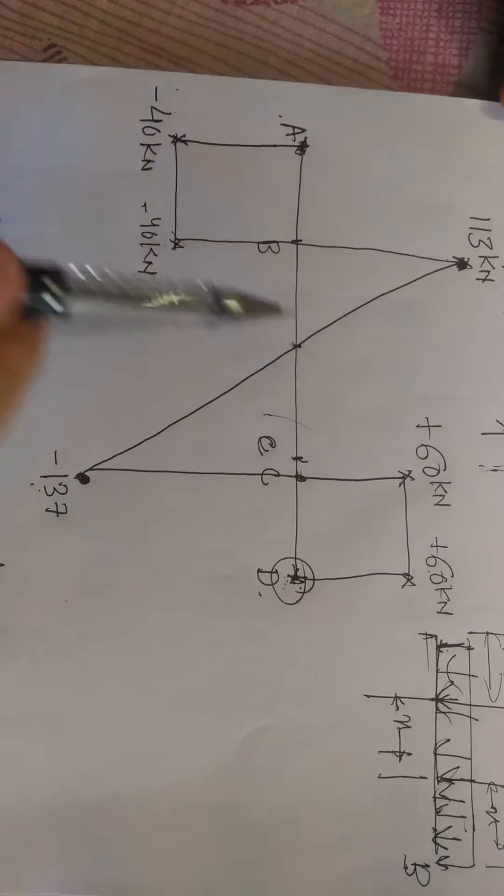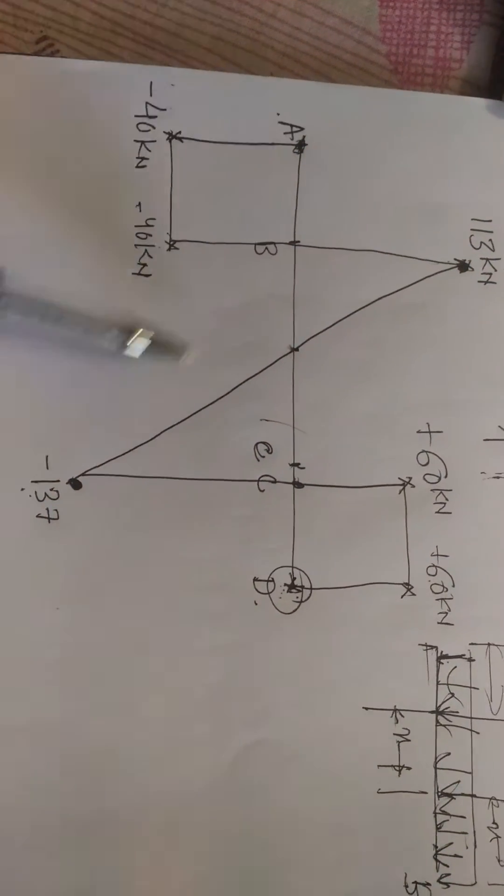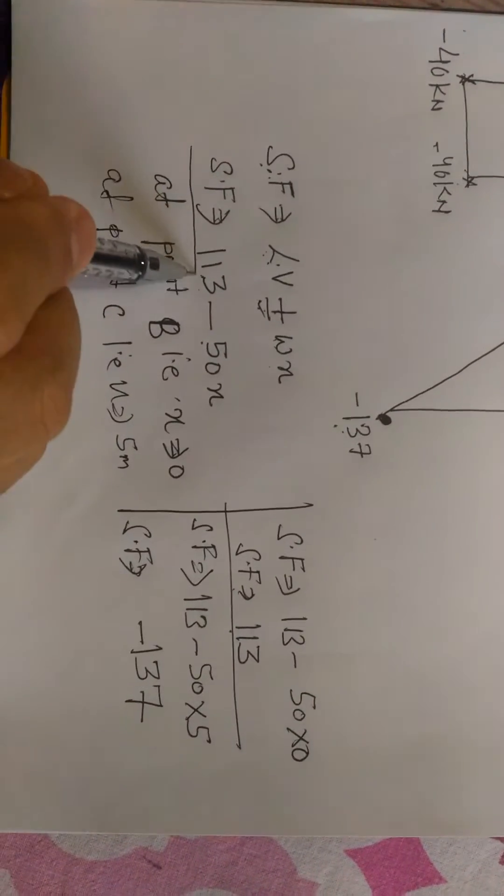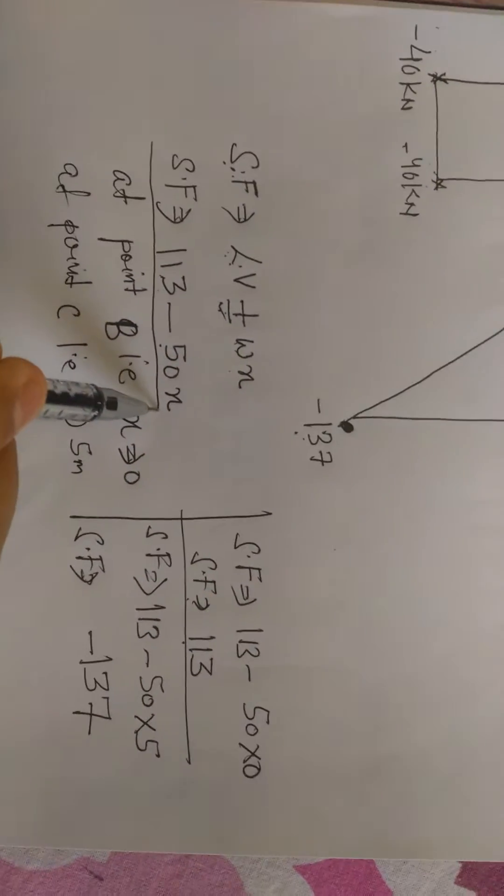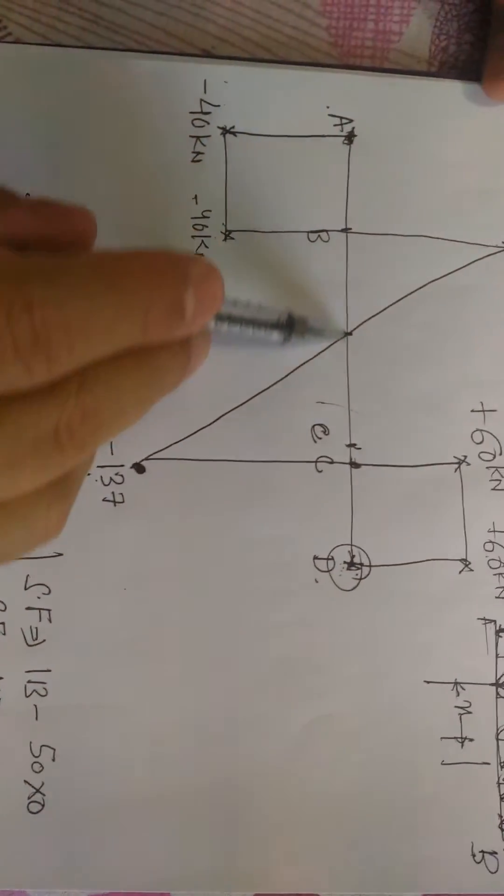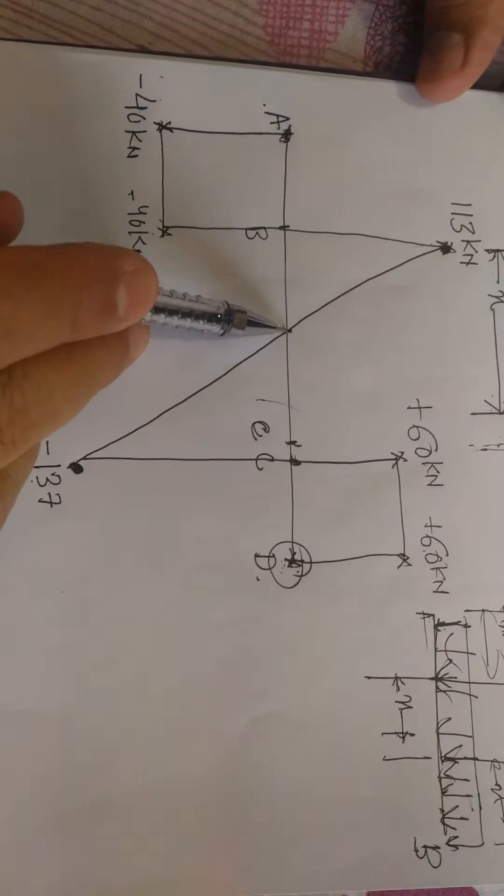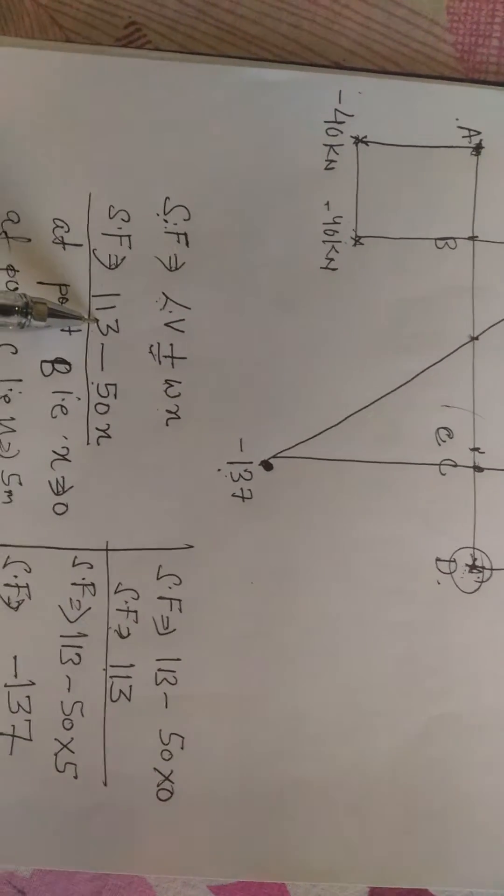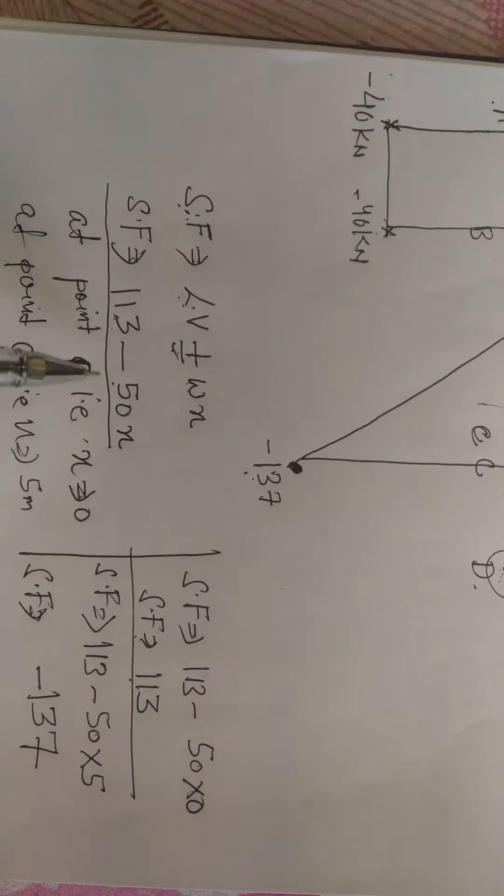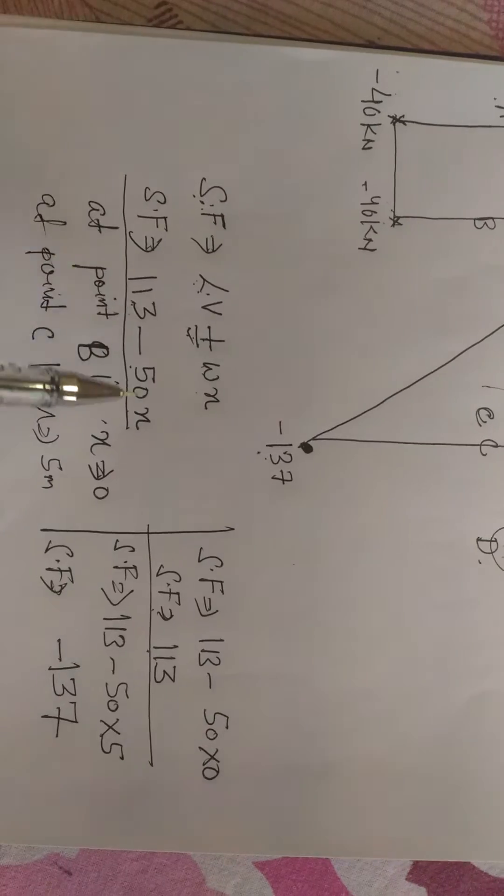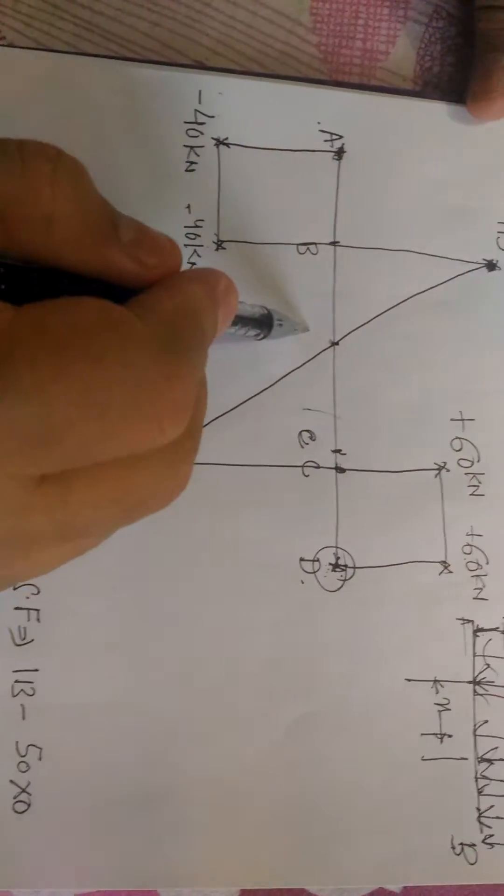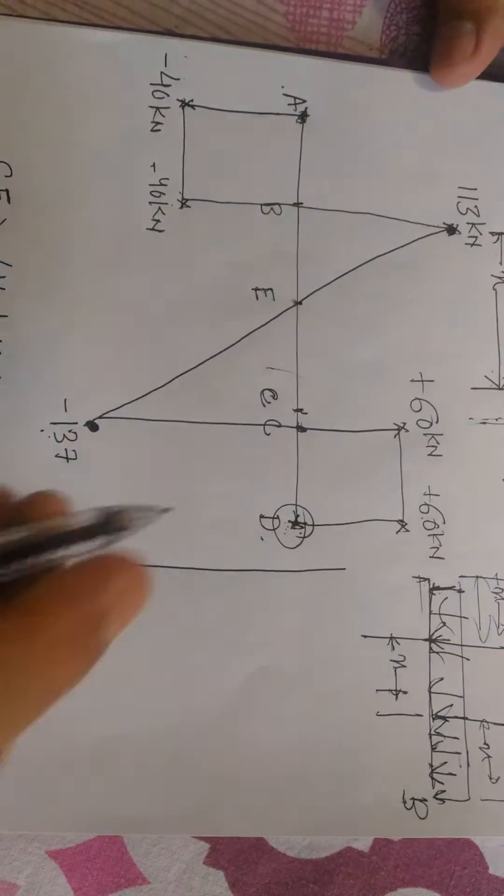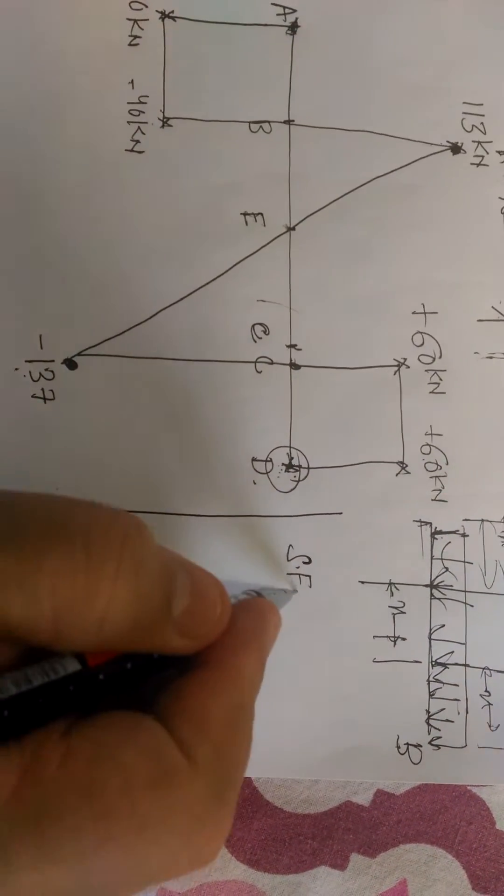That is very simple. The equation of this straight line is: shear force equals 113 minus 50x. Since this is the x-axis, the value of y on the x-axis is always zero. So putting this value of shear force for this equation equal to zero, you can easily find out the value of x, or the point E where this shear force line crosses the beam or x-axis.